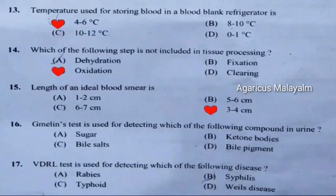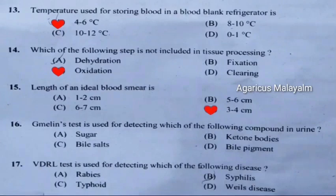Sixteenth question: Melin's test is used for detecting which of the following compound in urine. Correct answer is Option D: Bile pigment.